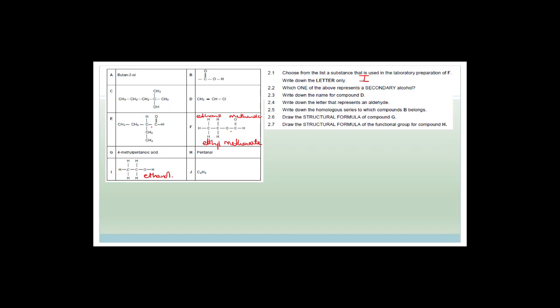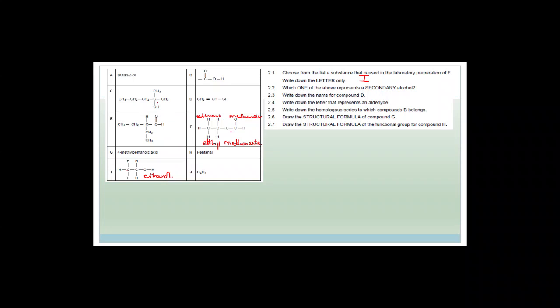Another thing I want to point out is that they've made a mistake here — this hydroxyl group has not got a line between the O and the H, whereas this one does. If you draw your hydroxyl groups with just OH instead of O-H, you're going to be marked down, because they've decided that people need to show that they know oxygen has two bonds, not hydrogen.